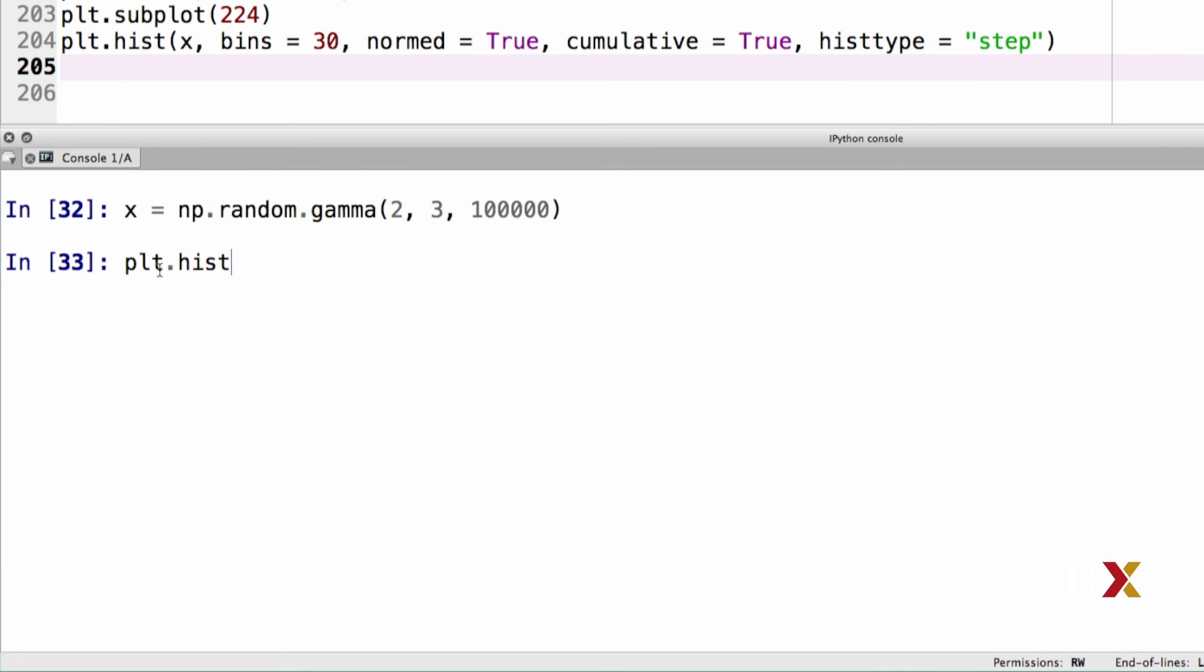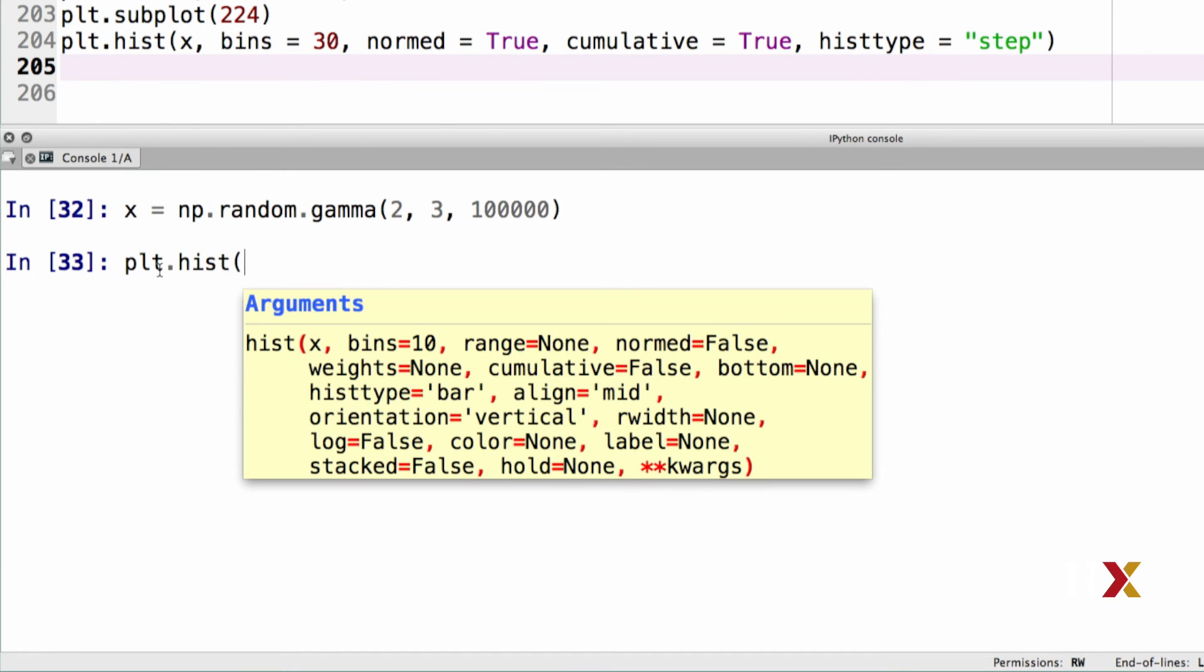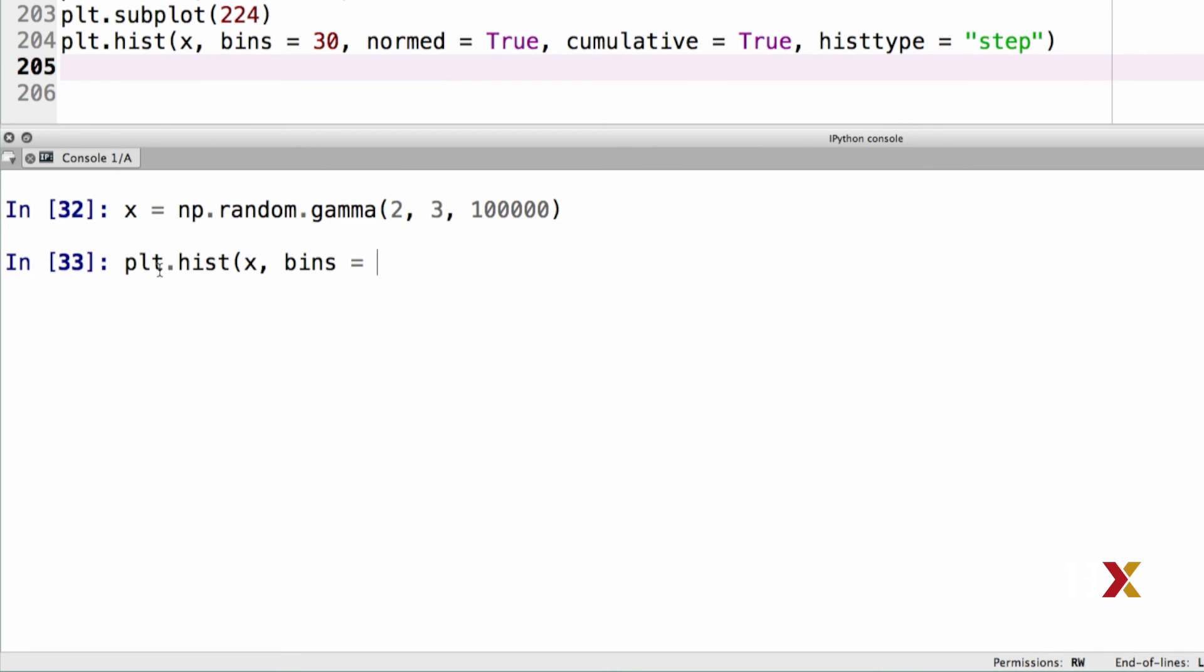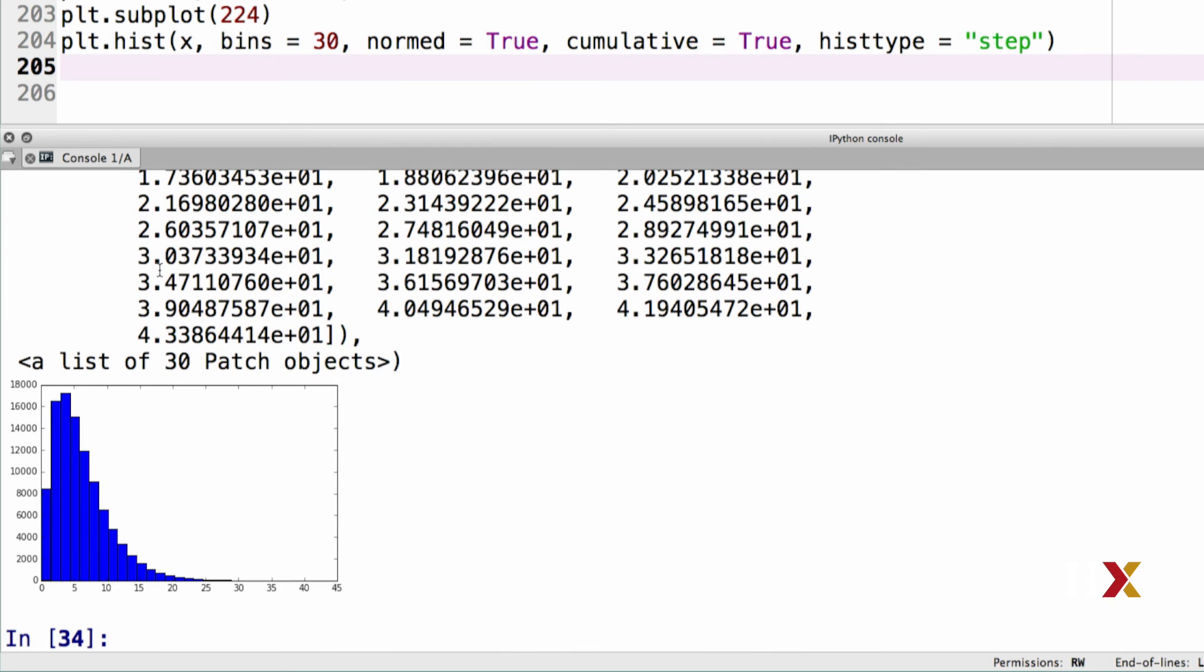First, we'll just use the plthist function to provide x, our input vector, and we specify the number of bins, which in this case is 30. And this is what the histogram looks like.